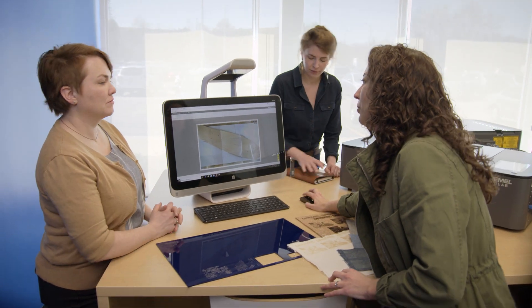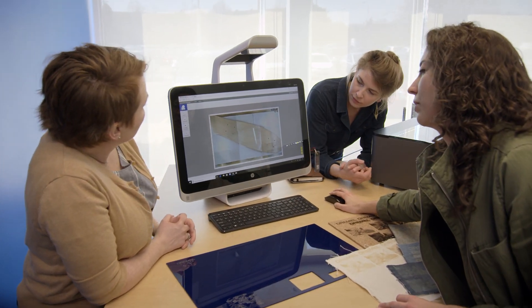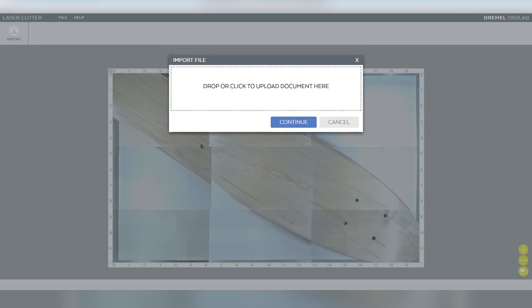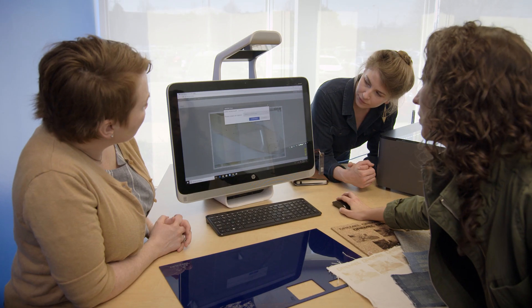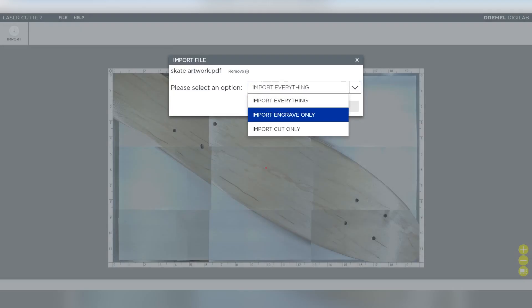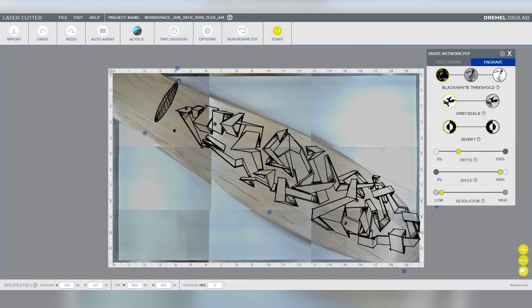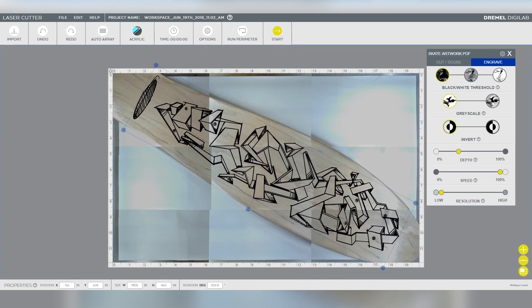You can either choose to import as you would in a traditional software program, or you can drag and drop it. This is a PDF, so you're going to see that you get the option to either import and engrave, import a cut, or you can import both. We're just going to do engrave. Then you can see how much easier this is to align now that we have the picture in the background.